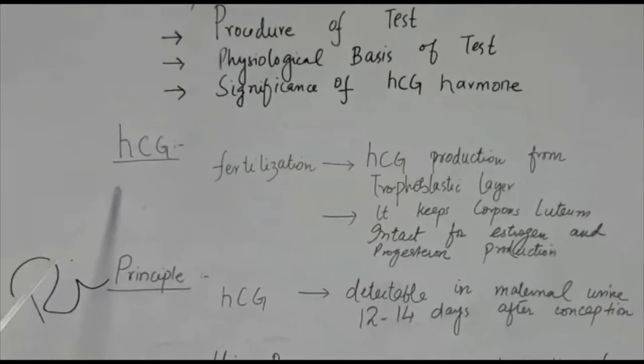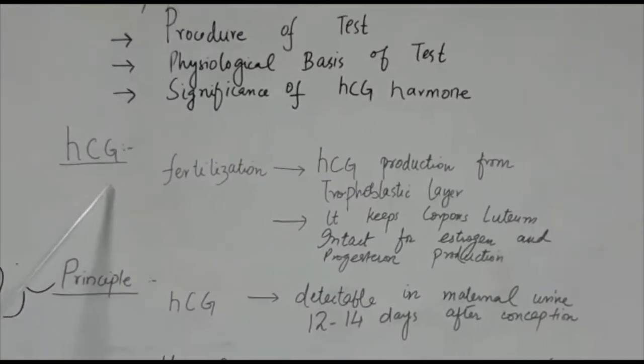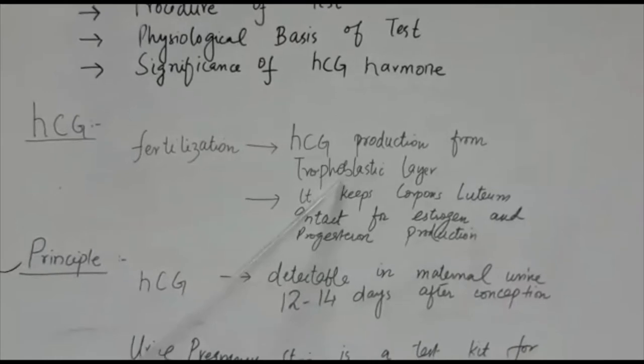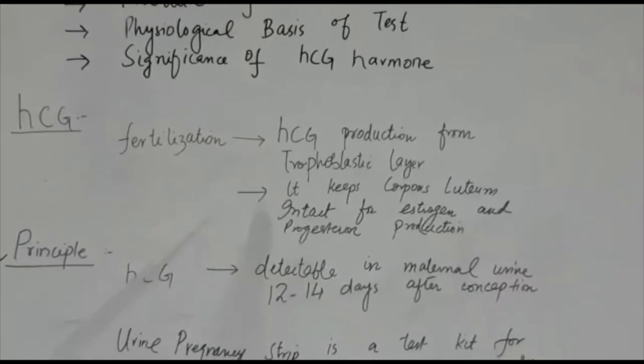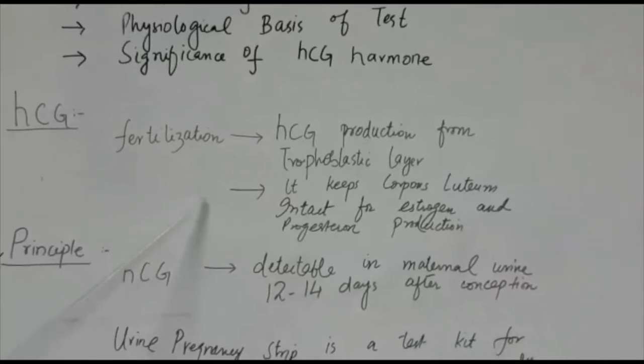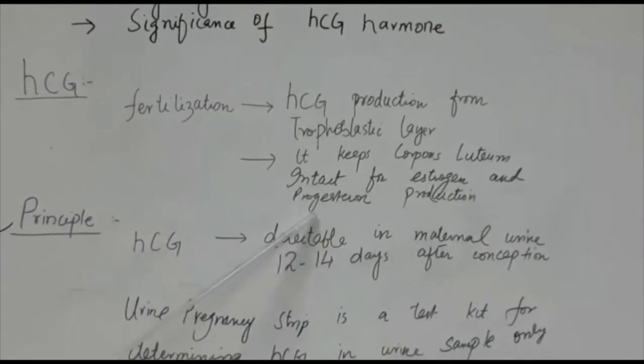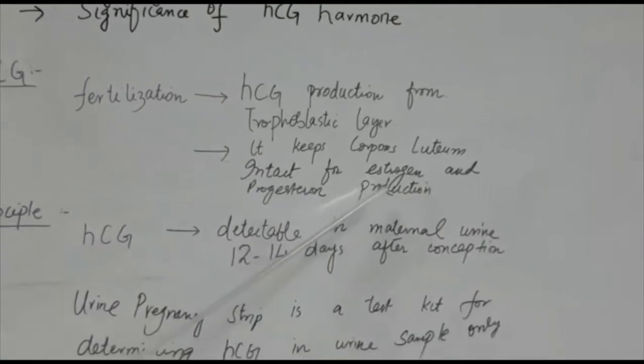What is the role of HCG? After fertilization, HCG production starts from the trophoblastic layer. What is its function? It is necessary to keep corpus luteum functioning for estrogen and progesterone production.